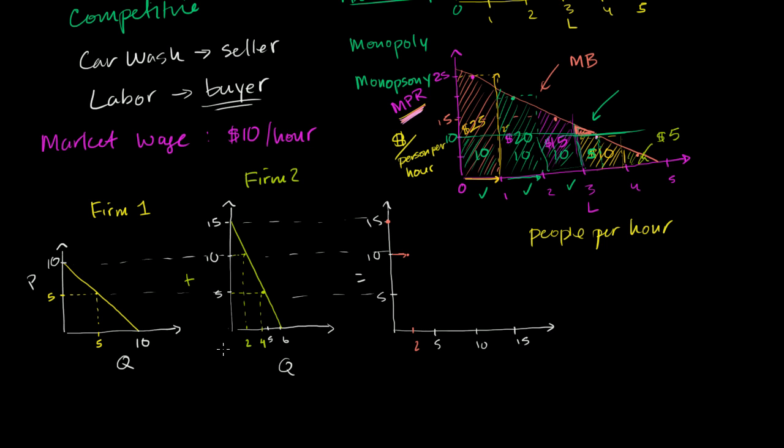firm 1 is going to demand 5. Firm 2 is going to demand 4 units of labor. So at a price of 5, you're going to have 5 plus 4. So at a price of 5, you're going to have 5 plus 4, or 9 units of labor. 9 units of labor.